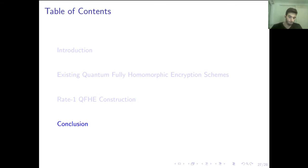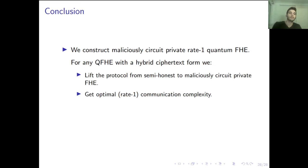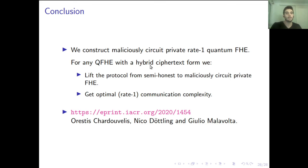To sum up the results: we construct a maliciously circuit-private rate-1 quantum FHE. By assuming a quantum FHE with this hybrid ciphertext form, we first lift the protocol to malicious circuit privacy, and then we also get optimal communication complexity — constructing the rate-1 quantum FHE. The link to the full version of the paper is available if you want to check it out for more details. Thank you.